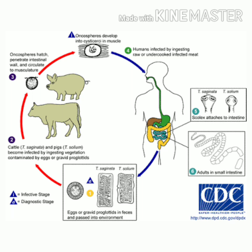Eggs come into the environment with the feces, and if cattle or pig takes a meal contaminated with these feces or eggs, the cattle or pig will be infected. In the intestine, these eggs hatch and give rise to the oncosphere. The oncosphere burrows through the intestinal wall and enters the bloodstream, through which it is disseminated to different body parts of the intermediate host — cattle — like skeletal muscle, brain, and eyes.